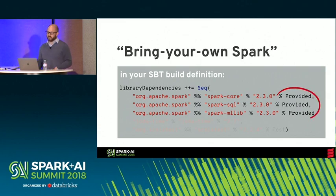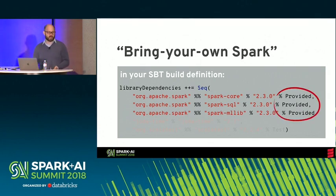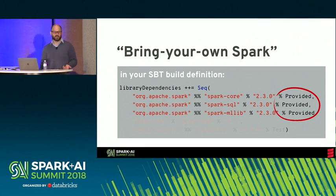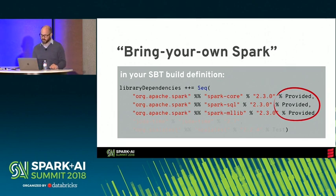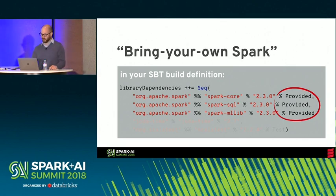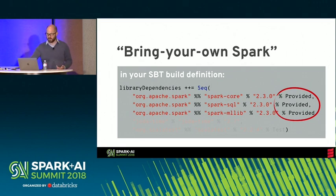You can add the Scala versions you want to support as a cross-Scala version setting in your build definition, then prepend any SBT task with a plus to execute it for every Scala version. This means you can compile, test, or publish for multiple Scala versions in a single command. Another aspect is the Spark version — by using the provided dependency scope for your Spark dependency, you can compile against one version but let your users bring their own.